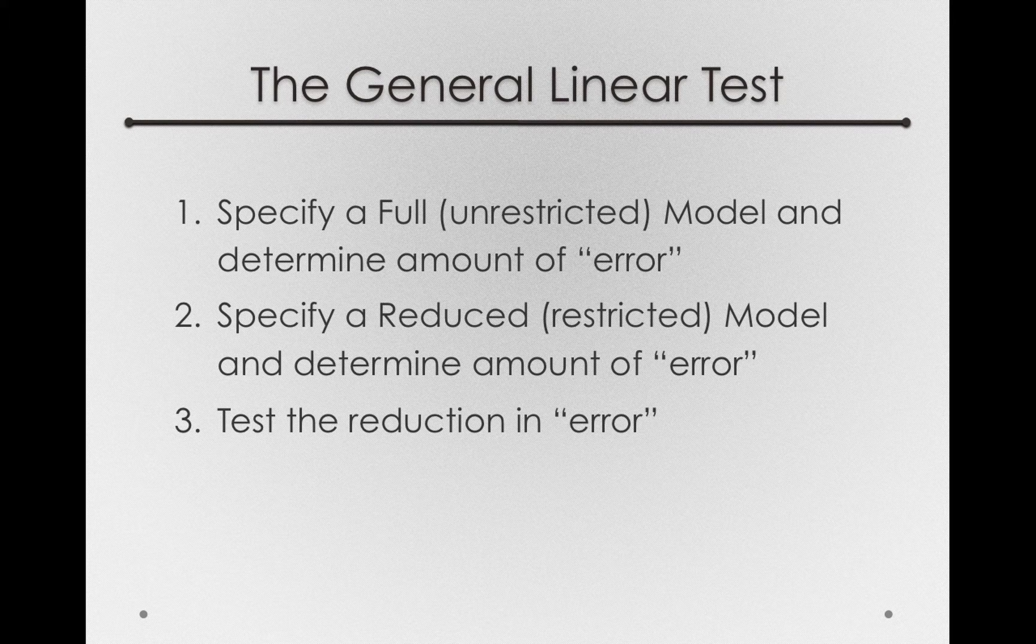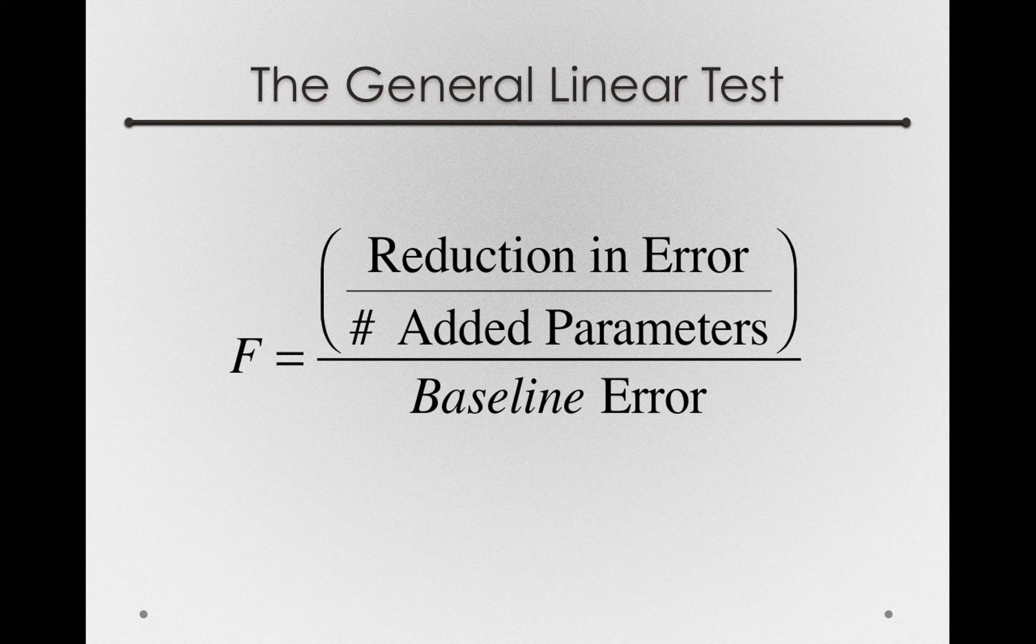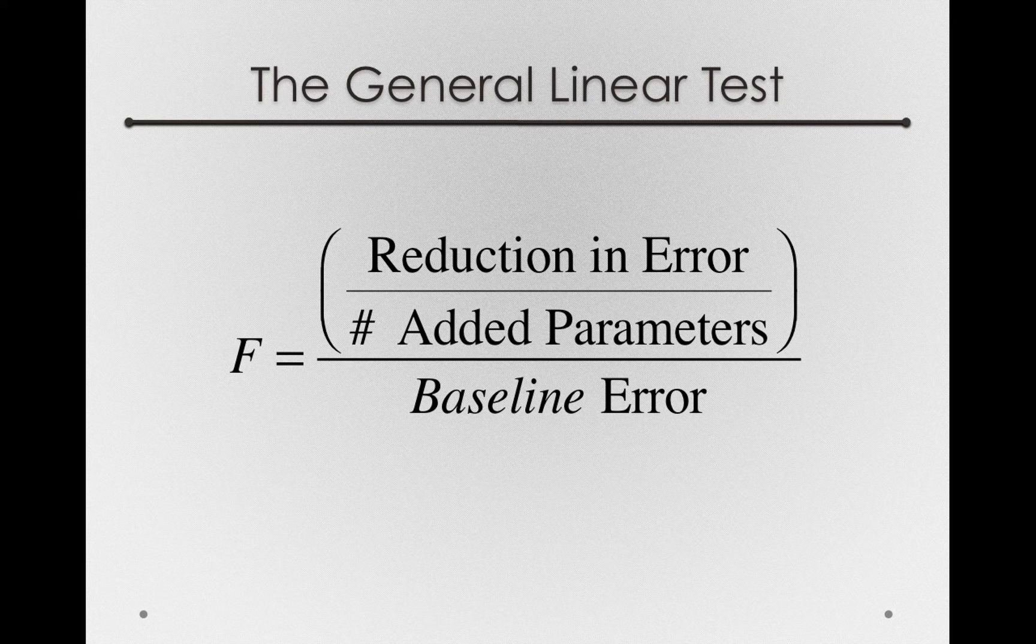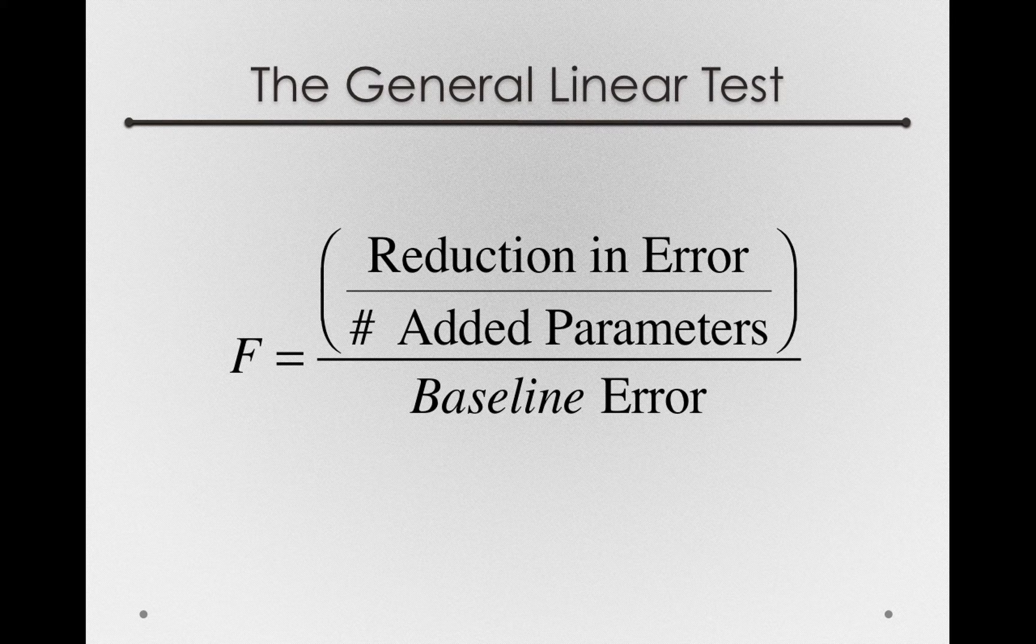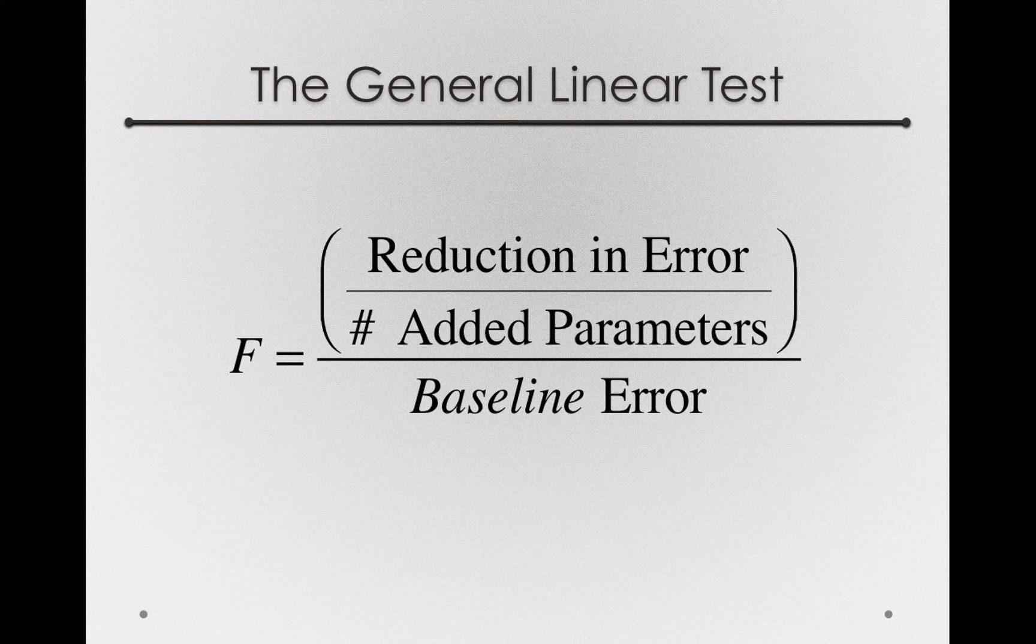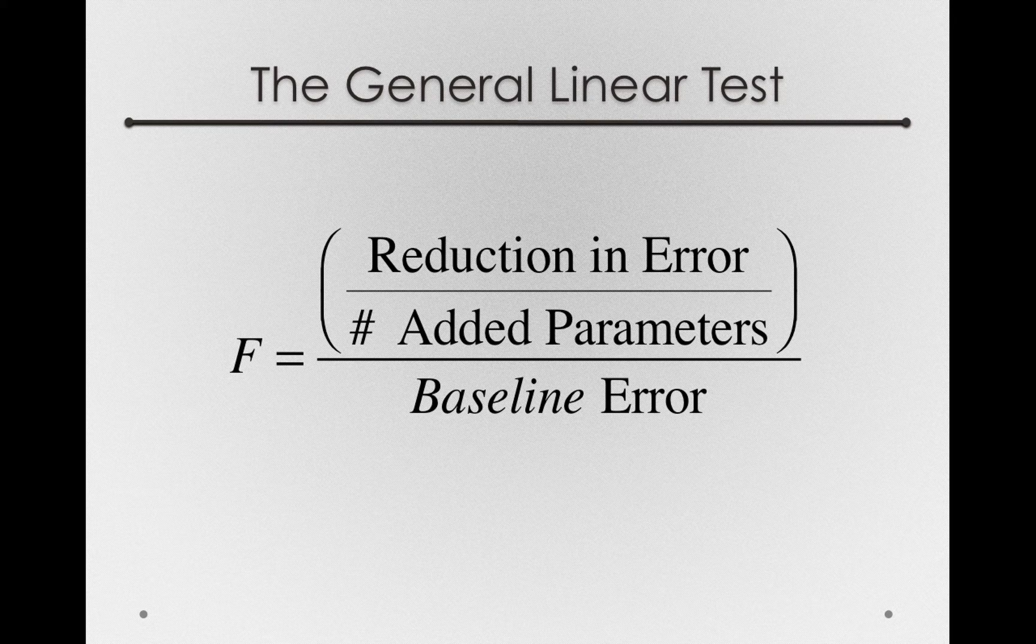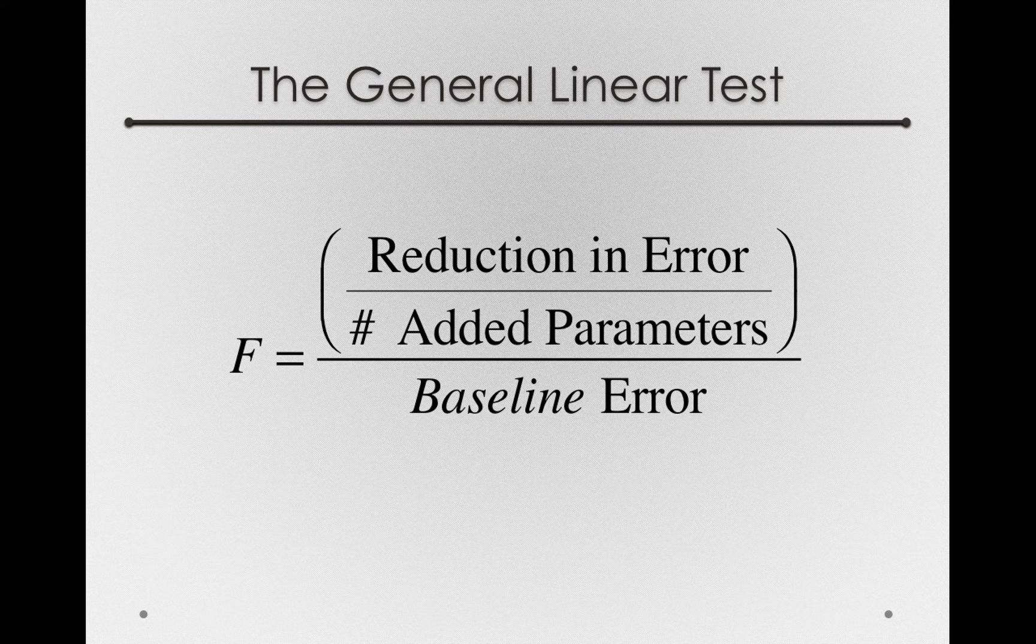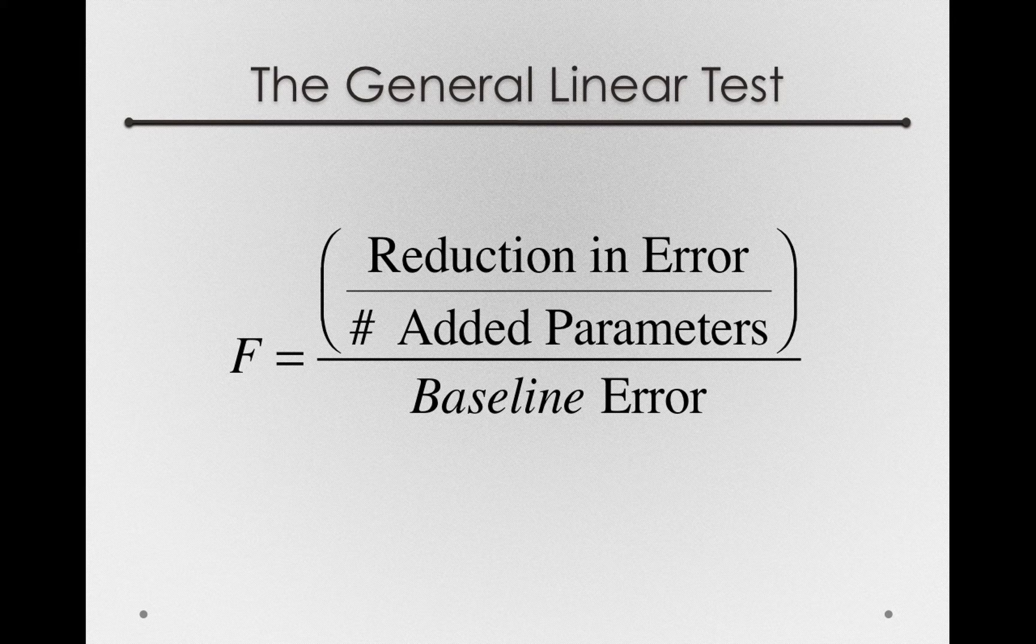So the general linear test looks like this. We're still going to form an F-statistic, and in reality, this general linear test for our one-factor linear model will end up being identical to the analysis of variance test, but we're going to get to it in a slightly different way. The F-statistic we form is, in the numerator, a reduction in error divided by the number of additional parameters we need to estimate divided by some measurement of baseline error.